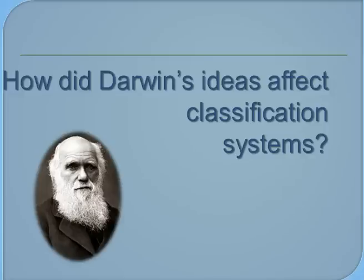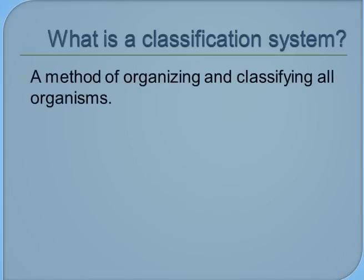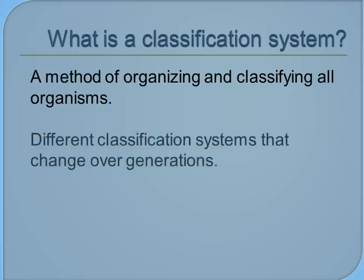How did Darwin's ideas affect classification systems? First of all, what is a classification system? A classification system is a method of organizing and classifying all organisms. There are different kinds of classification systems, and they change over generations as new organisms are discovered.